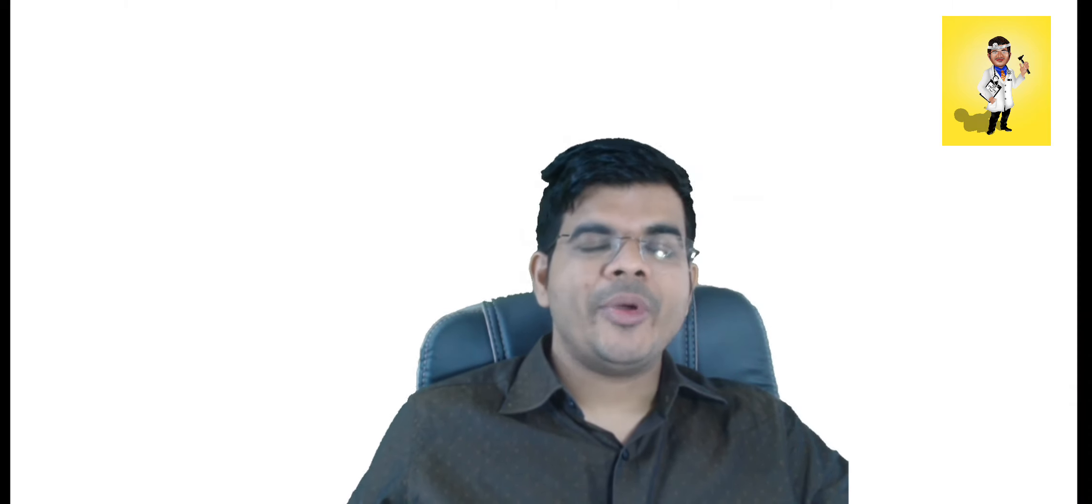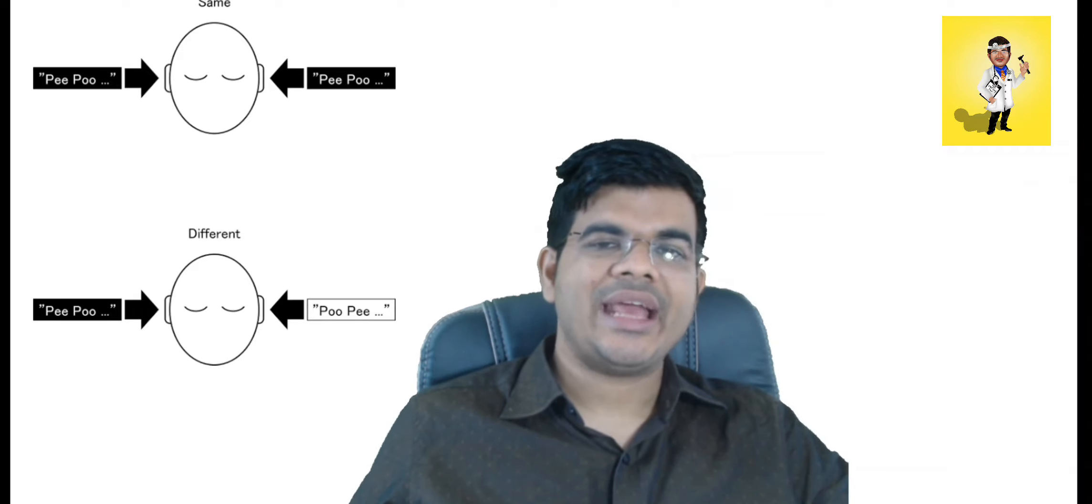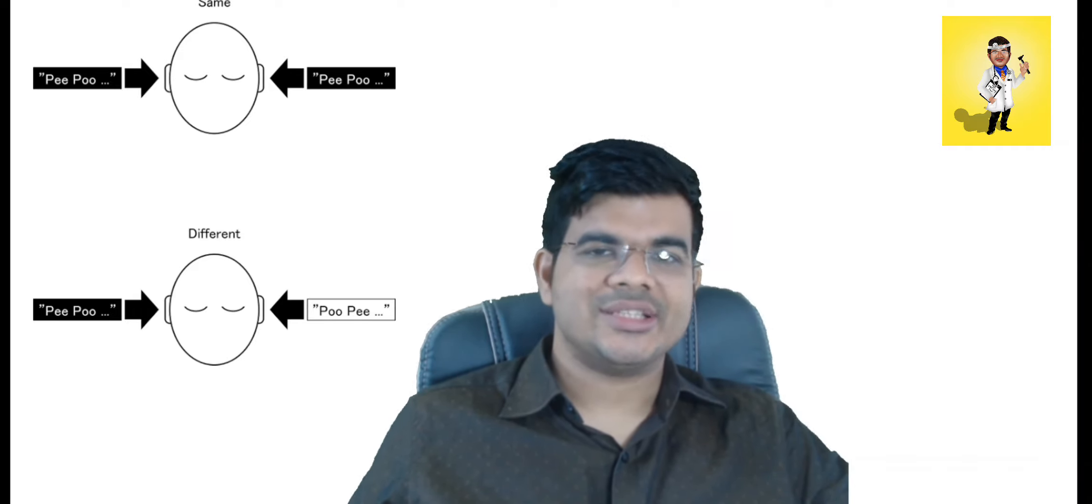So because of the difference in frequency of hearing loss in both ears, there will be difference in hearing perception in these two ears and that can result in diplacusis.